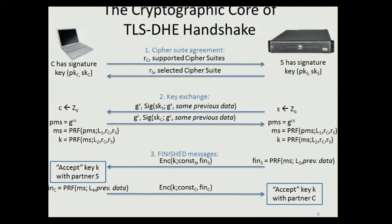The third phase consists of the finished messages. The server computes its finished message by applying the pseudorandom function on the master secret, some label, and all previous data. This finished message is encrypted together with some constant const_s, and the ciphertext is sent to the client. The client decrypts it, checks the validity — essentially a MAC over all previous data — and if it verifies, accepts the key K with communication partner S. The client then computes and transmits its own finished message, and the server accepts if it is correct.